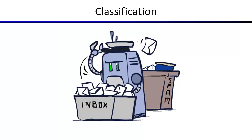Classification is about building automated systems that look at a bunch of decisions and make them automatically. One example is a spam filter that's supposed to go through all of your inbox message by message, read them at lightning speed, and decide whether or not they should be put in your spam folder.